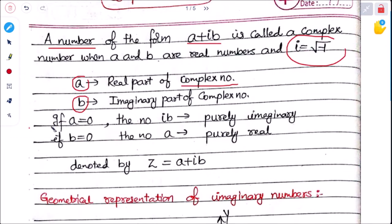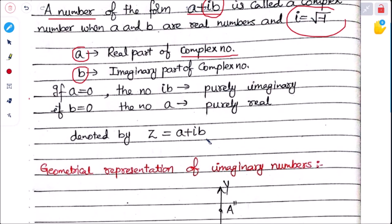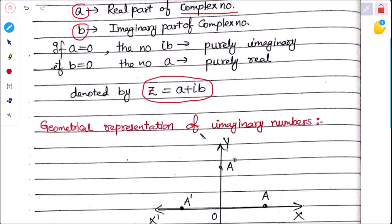If a = 0, we are left with only ib, so it is called a purely imaginary quantity. Similarly, if b = 0 we are left with a, which is purely real — in the absence of an imaginary quantity, it is called purely real. A complex number is generally represented as z = a + ib.